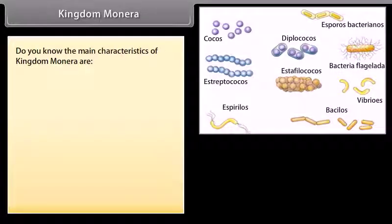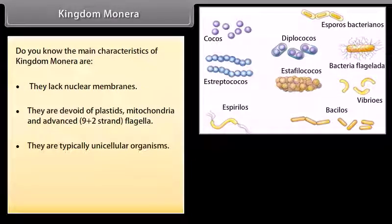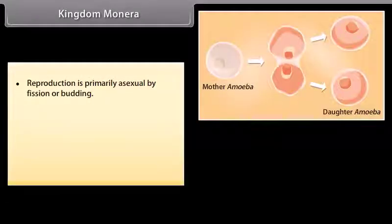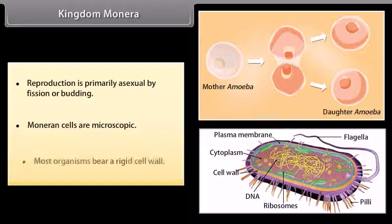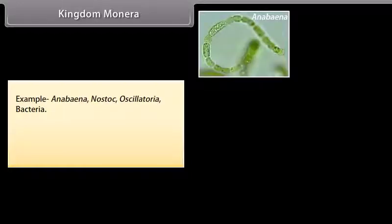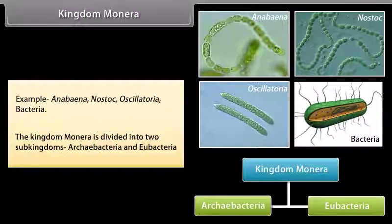Kingdom Monera: the main characteristics of Kingdom Monera are that they lack nuclear membranes and are devoid of plastids, mitochondria, and advanced 9+2 strand flagella. They are typically unicellular organisms. The predominant mode of nutrition is absorptive, but some groups are photosynthetic or chemosynthetic. Reproduction is primarily asexual by fission or budding. Moneran cells are microscopic and most organisms bear a rigid cell wall. Examples: Anabaena, Nostoc, Oscillatoria. The kingdom Monera is divided into two sub-kingdoms: Archaebacteria and Eubacteria.